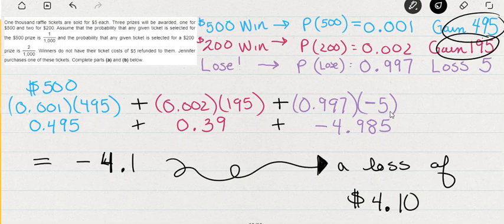For expected value, all we need to do now is multiply the probability of winning $500 times the gain, which is $495. So that comes out to $0.495. And then for the $200 win, because there were two winning tickets for this, we have two 1,000ths times the gain of $195, gives us $0.39.